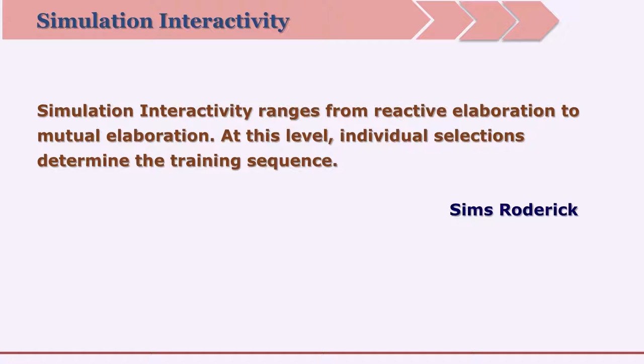Simulation interactivity ranges from reactive elaboration to mutual elaboration. In reactive elaboration, the learner is simulating the environment and managing components, which simply react. In mutual elaboration, the computer-assisted package also gives feedback in terms of actions, so you can directly see consequences. For example, if you are doing a science experiment, the computer may not stop you — it may allow you to complete the experiment even if you are doing wrong things. As a result, there may be an explosion, a fire, or a blast, and then the learner realizes what went wrong.